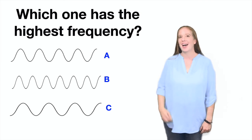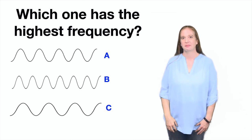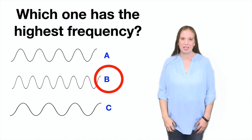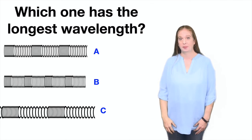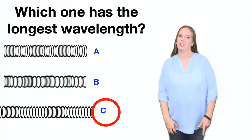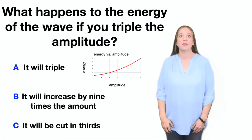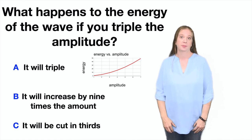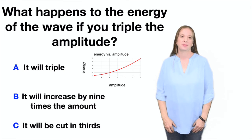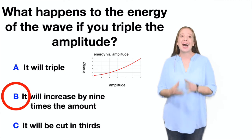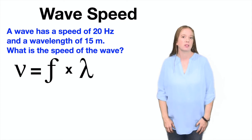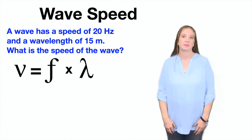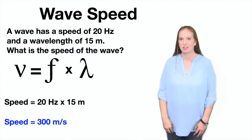Let's review. Which one has the highest frequency? That's right. It's letter B. Which one has the longest wavelength? If you guessed C, you're correct. What happens to the energy of the wave if you triple the amplitude? It will actually increase by nine times the amount. A wave has a speed of 20 hertz and a wavelength of 15 meters. What's the speed of the wave? The speed is 300 meters per second.